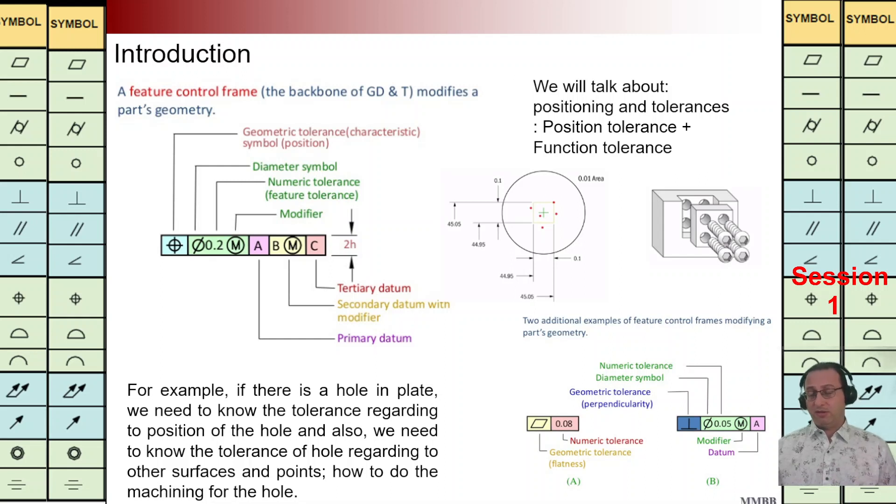But this is the third question. Before going to answer the third question we have two examples here. Let's say flatness in the first box we can see in this box and we have just one number in the second box and we don't need to have any reference plane for flatness.